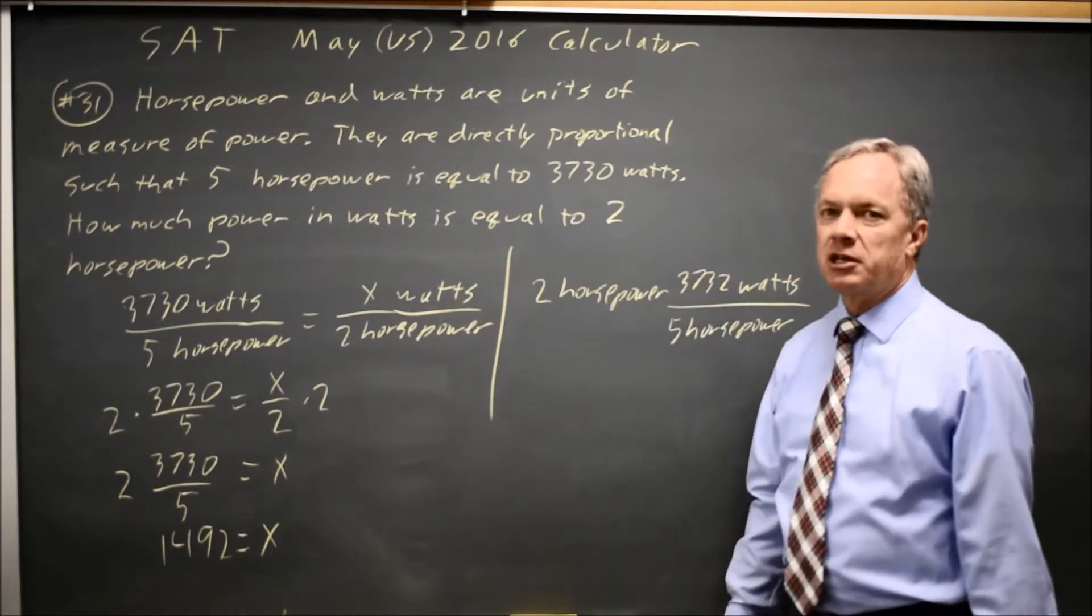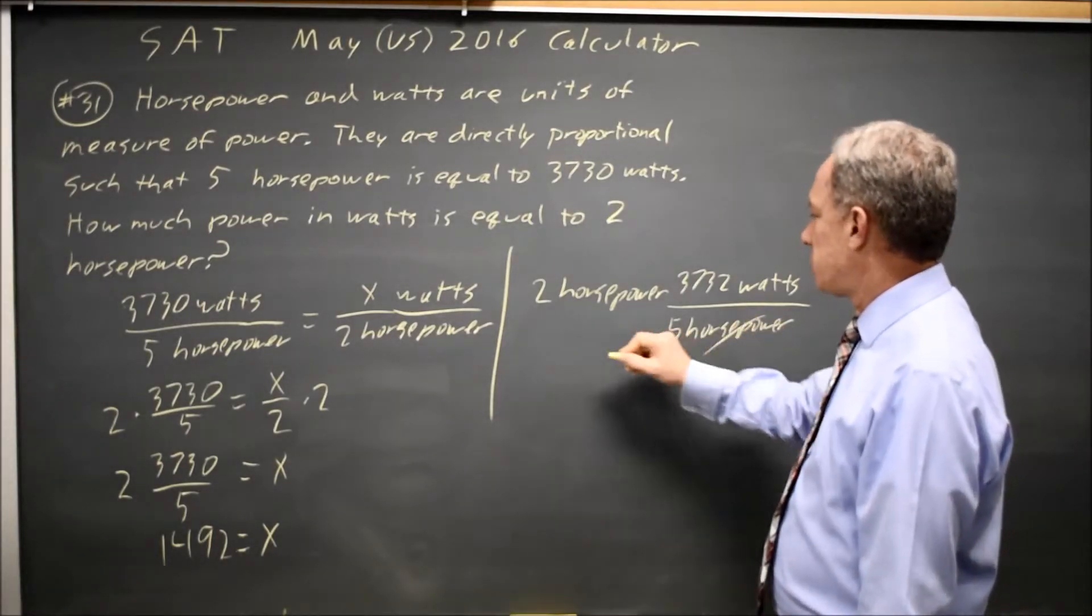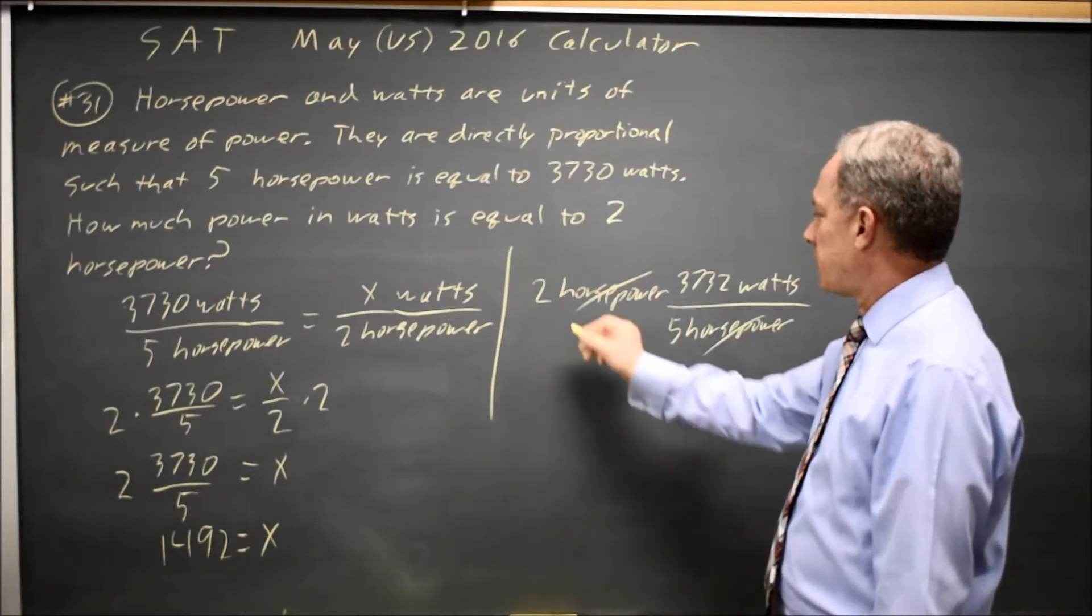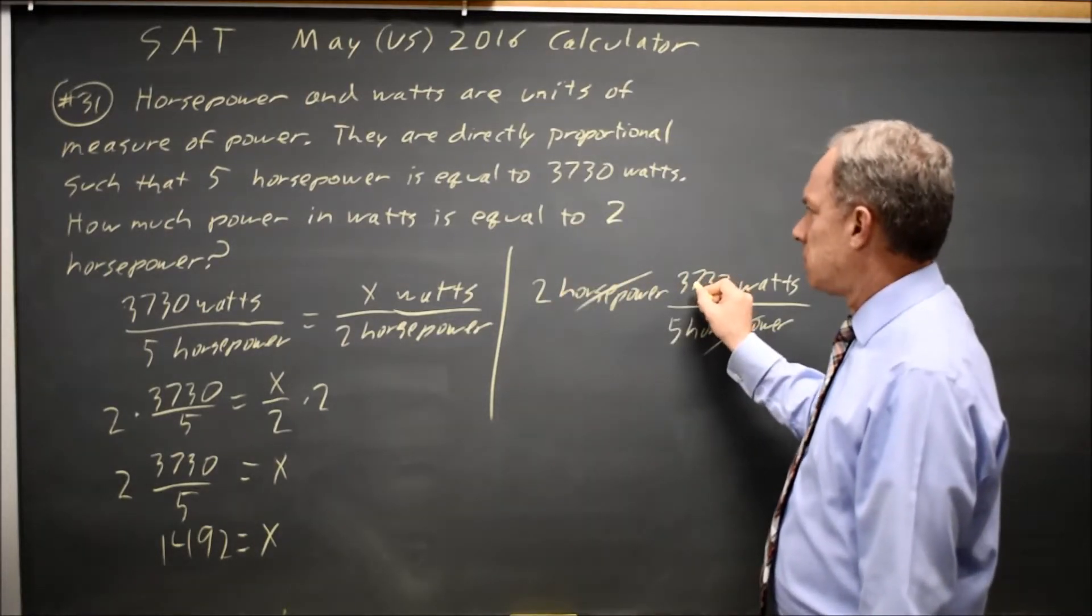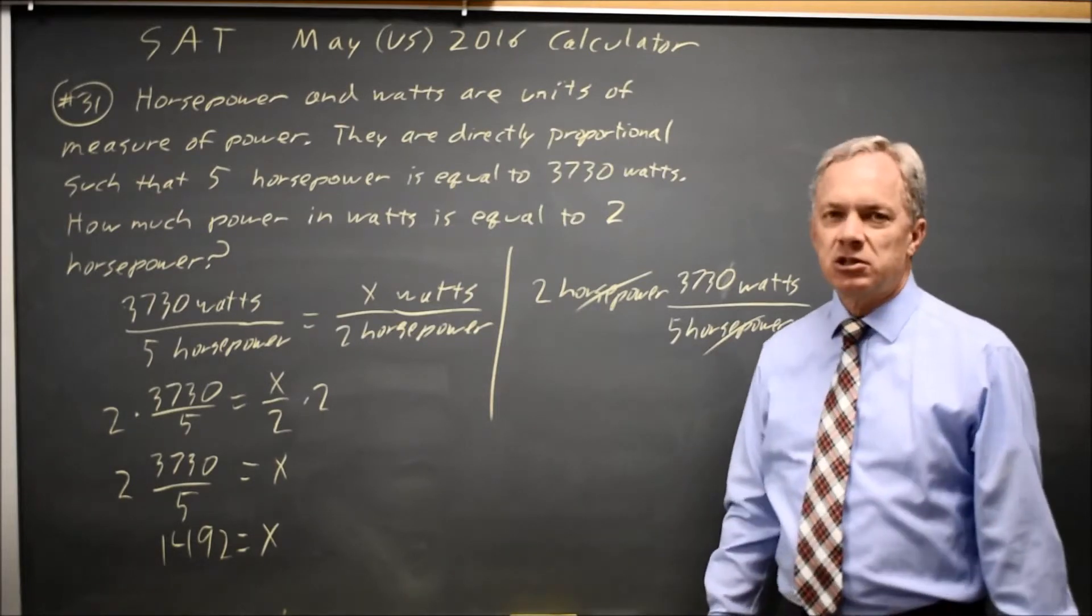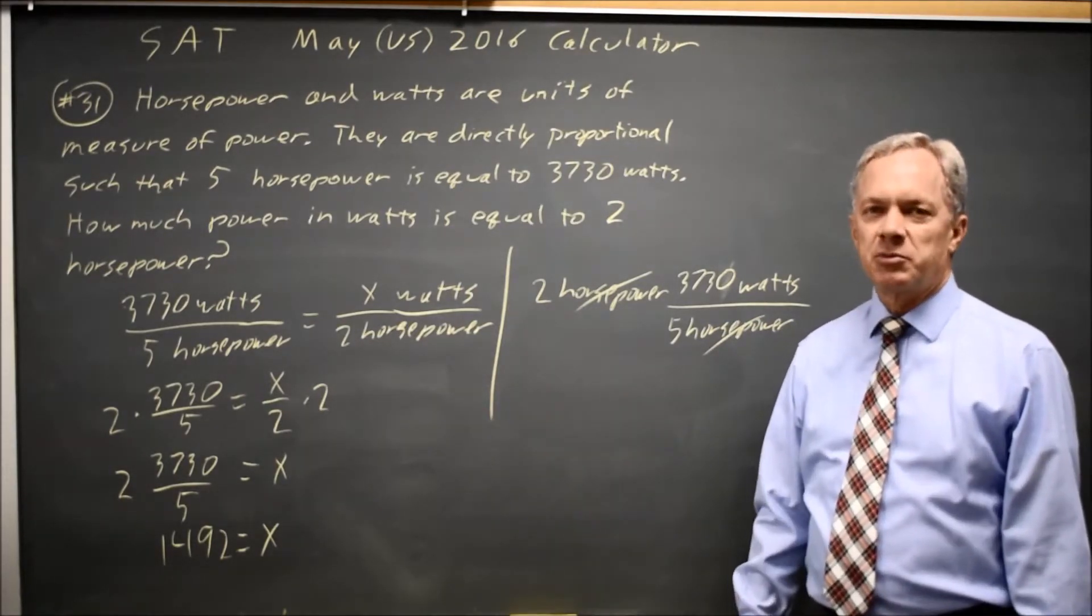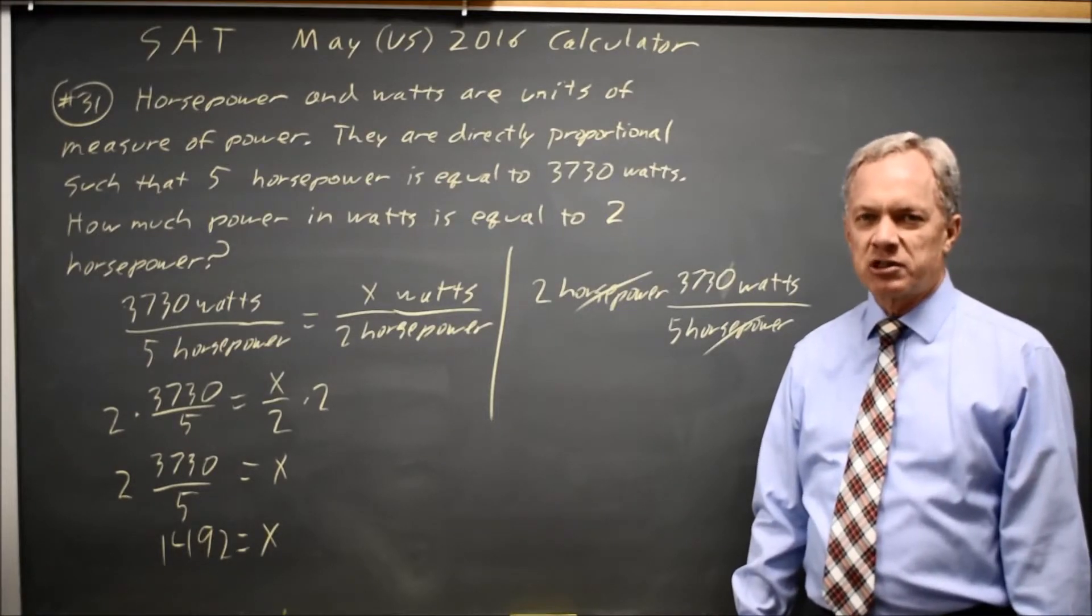This is how I typically convert units. Since I know that with horsepower in the denominator, that'll cancel the horsepower up here, and I'm left with 2 times 3730, not 3732, 2 times 3730 over 5, which is the same computation I got on my first method.